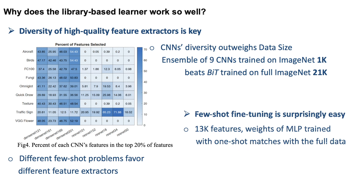Another reason we find is that feature fine-tuning is surprisingly easy. Even when talking about 13K-plus features, the weights of the MLP trained with one shot actually match those trained with the full data. That tells us one image offers a lot of information, and the number of training points has smaller effects than we expected.